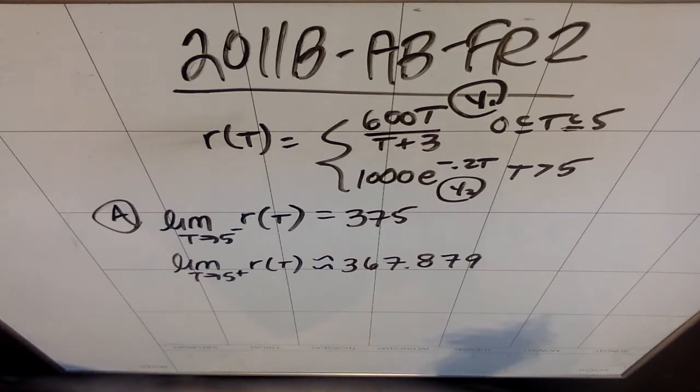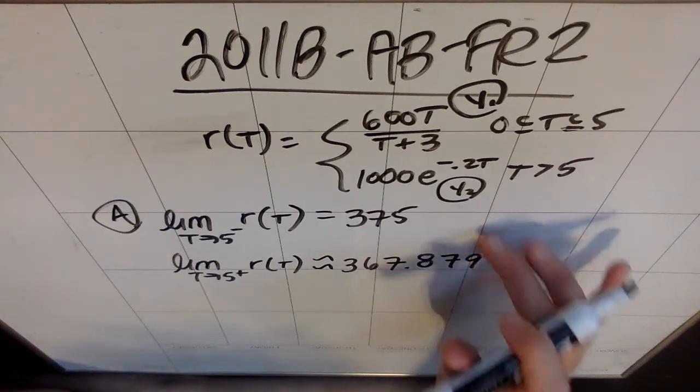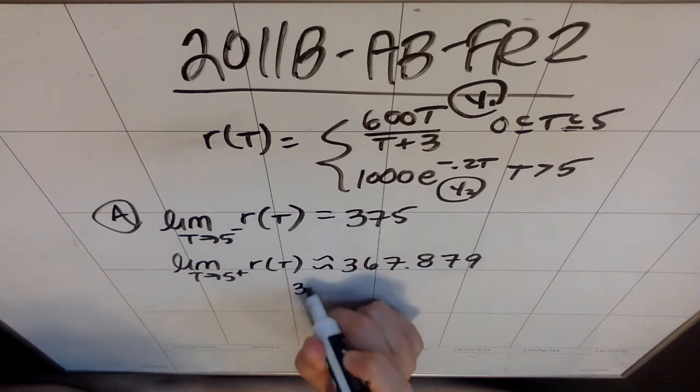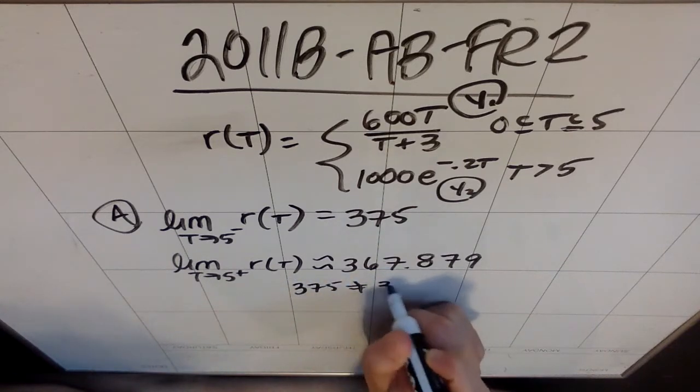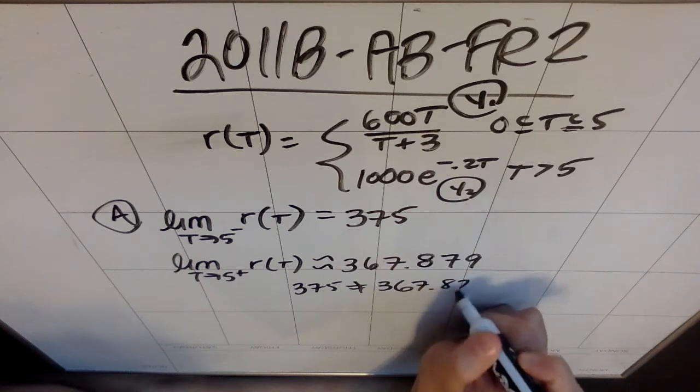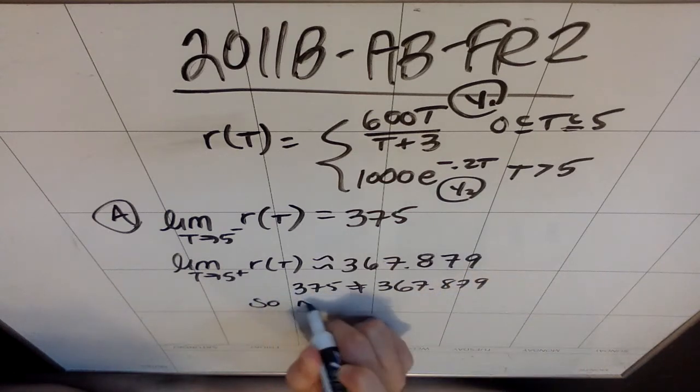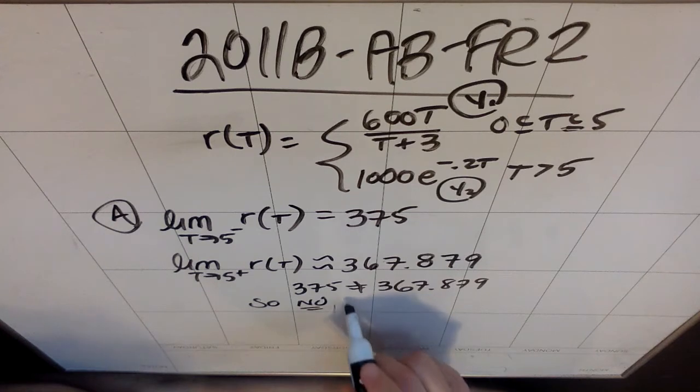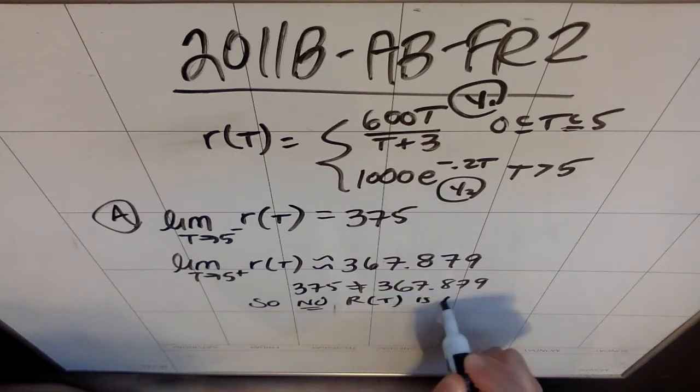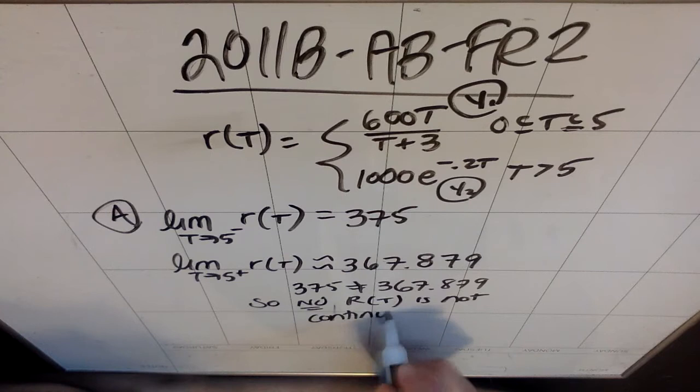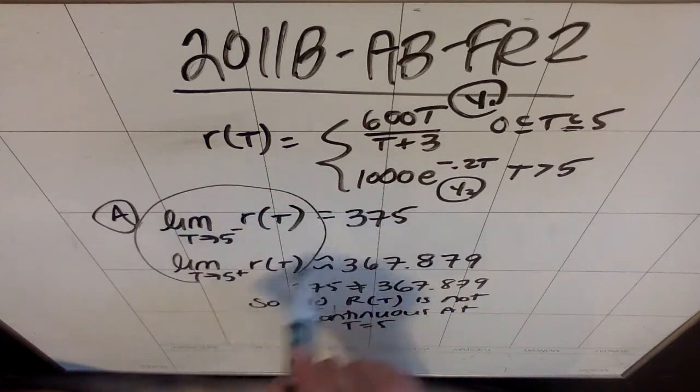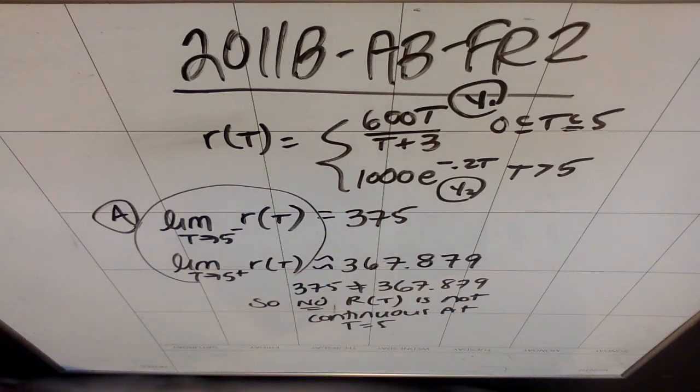Since the left-sided limit and the right-handed limit are not equal, the left-sided and right-sided limits are not the same. So 375 does not equal 367.879. So no, r of t is not continuous at t equals 5. So again, you need this limit notation. It's important that you use that when they ask you to prove why something is continuous or not. So show the work that leads to answer. There you go.